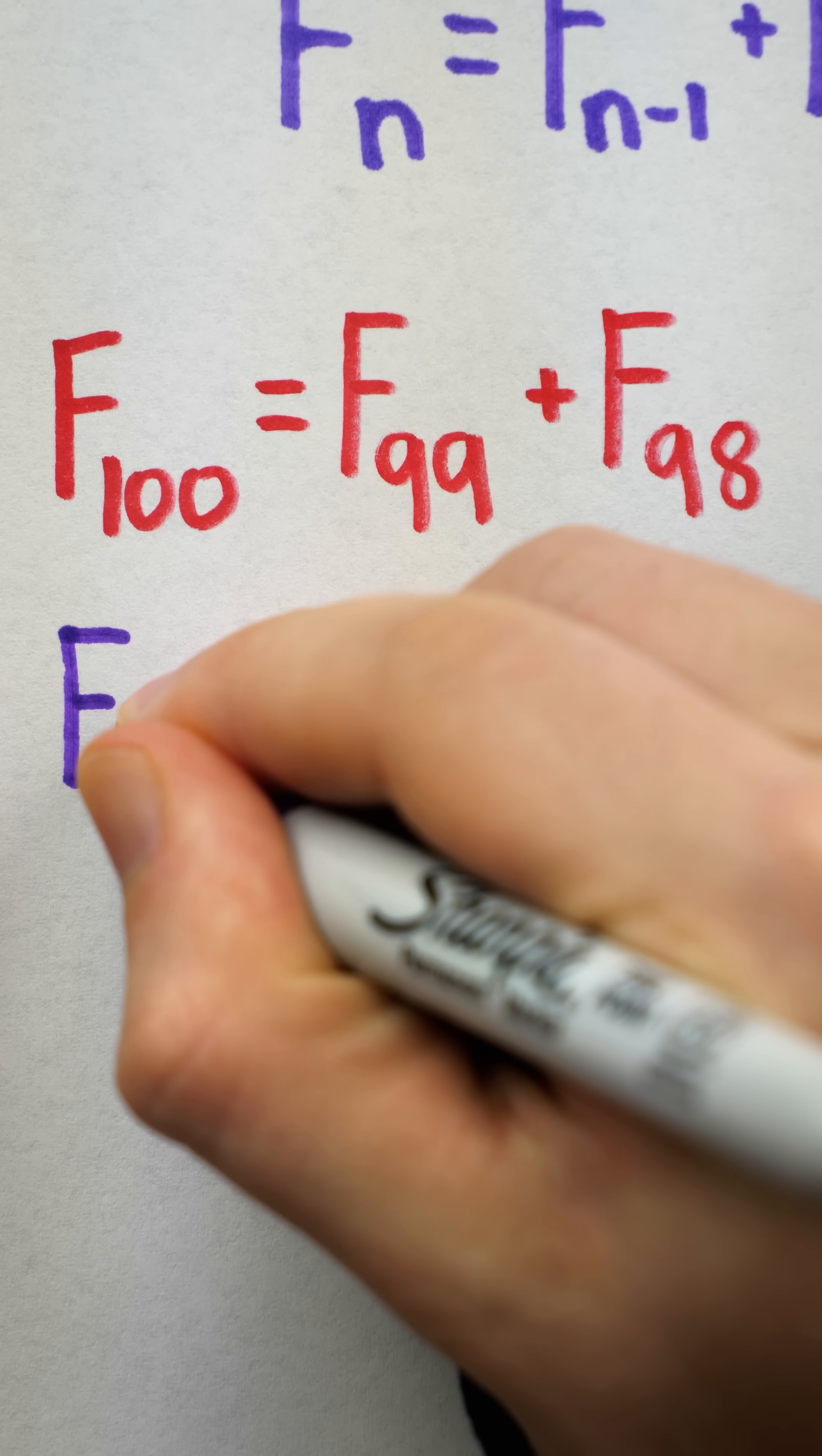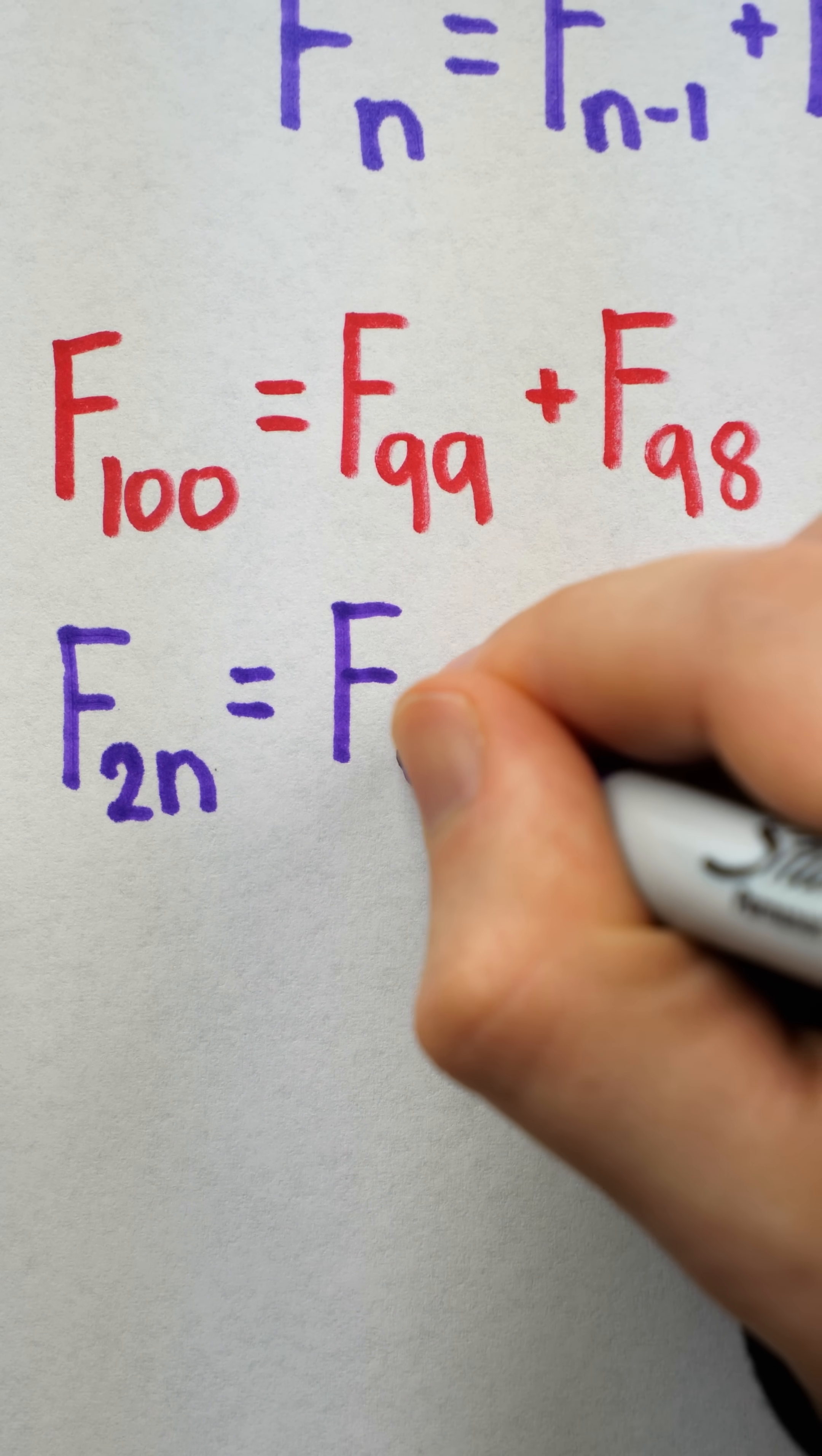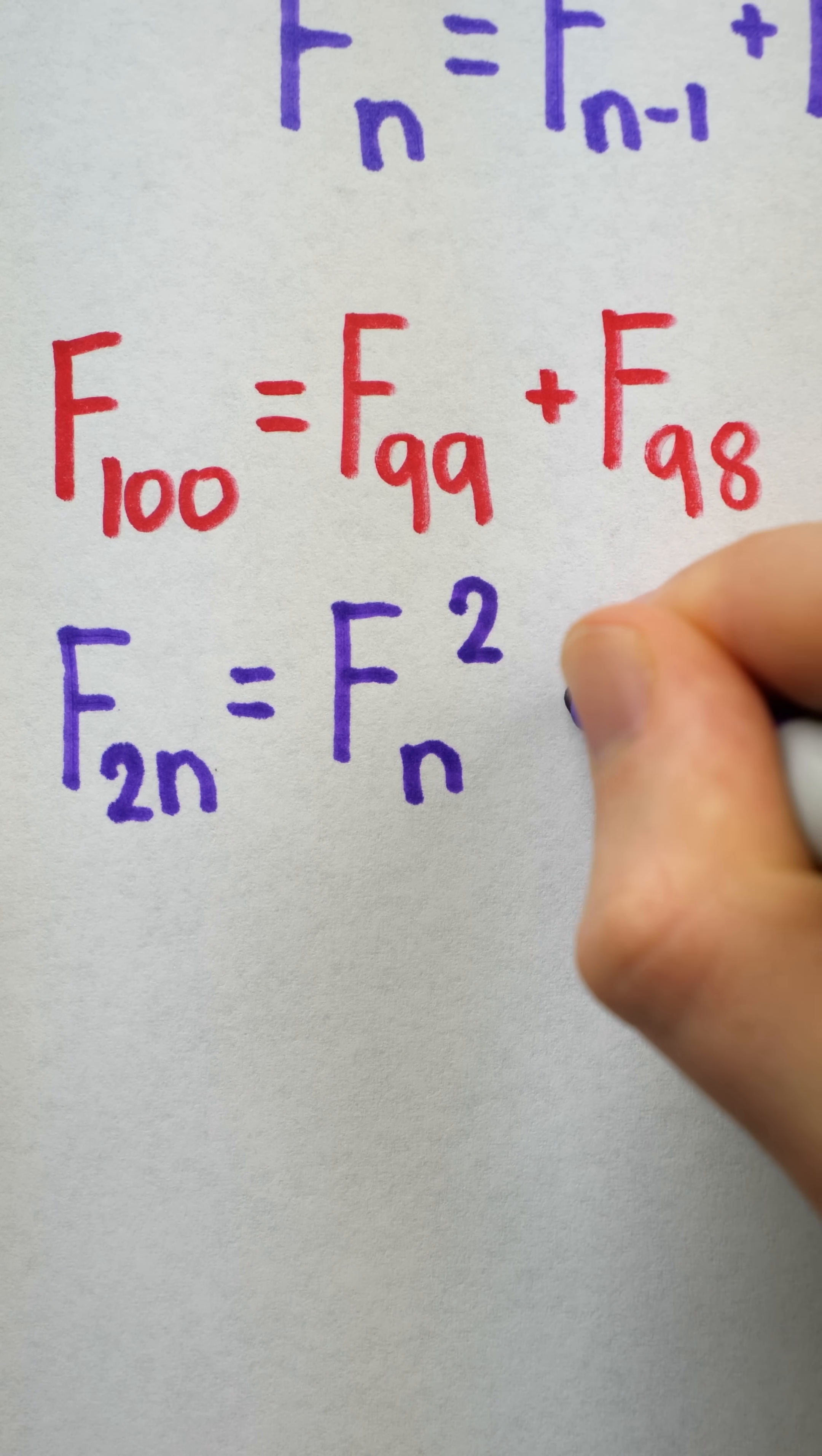But in fact, there's this really nice identity for even index Fibonacci terms. Indeed, F2n is equal to Fn squared plus Fn minus 1 squared.